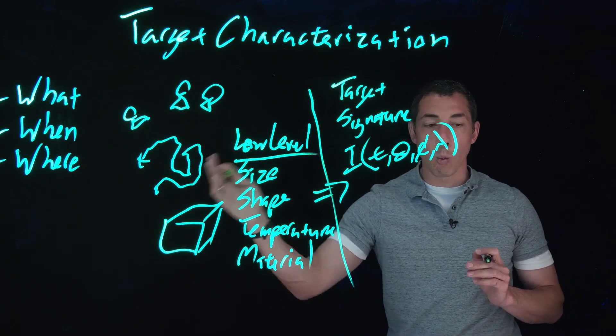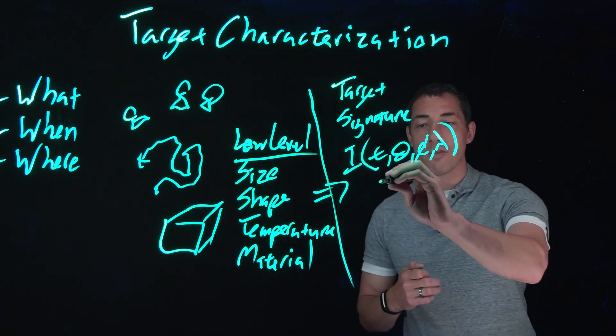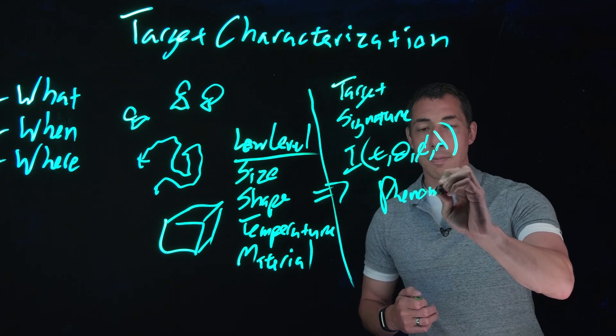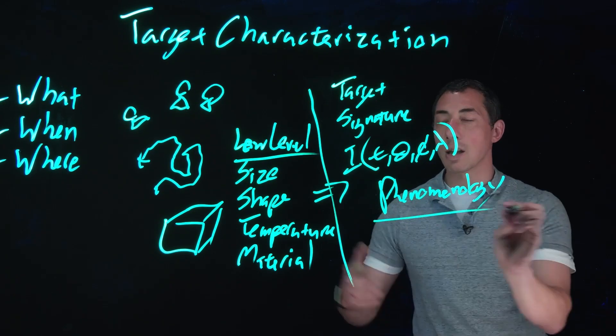So this all feeds into what is it, when is it there, what is it doing, how is it moving. And this target signature is then the phenomenology that we can start to exploit with our imaging systems.